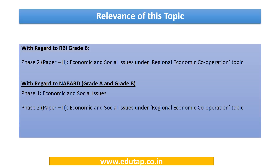The relevance of this topic with respect to RBI Grade B will be in Phase 2, Paper 2, Economic and Social Issues under the Regional Economic Cooperation topic. With regard to NABARD, Grade A and Grade B will be in Phase 1, Economic and Social Issues, and Phase 2, Paper 2, Economic and Social Issues under Regional Economic Cooperation.